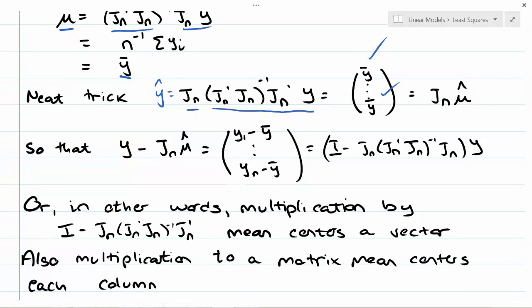If we calculate the residuals, y minus y-hat, we get the centered vector, y minus y-bar, done component-wise. That works out to be (I minus the hat matrix with the vector of ones) times y.